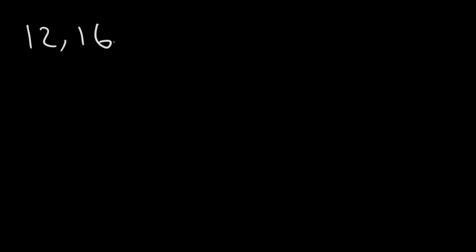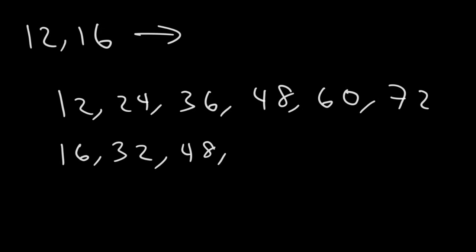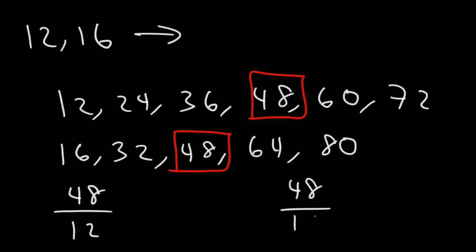Let's try an example with larger numbers. What is the LCM of 12 and 16? Multiples of 12 are 12, 24, 36, 48, 60, 72. Multiples of 16 are 32, 48, 64, and 80. So the least common multiple of 12 and 16 is 48. 48 is the lowest number that is divisible by both 12 and 16 — 48 divided by 12 is 4, and divided by 16 is 3. So the LCM is 48.